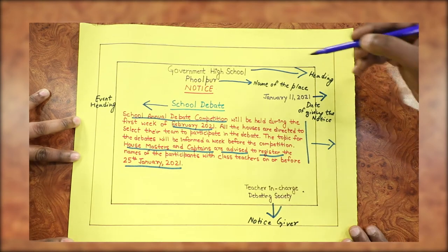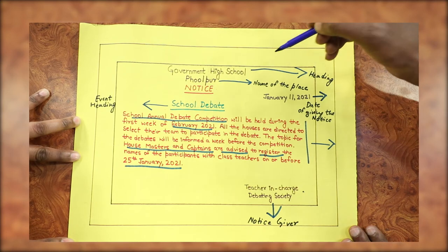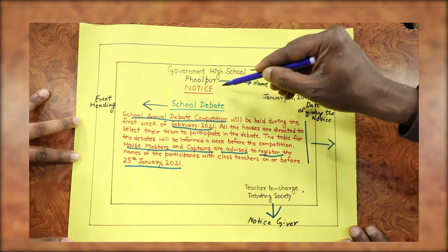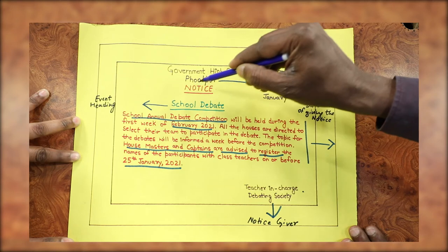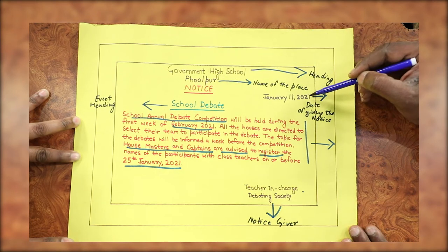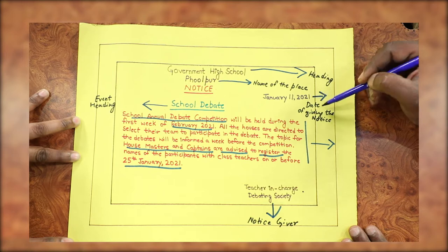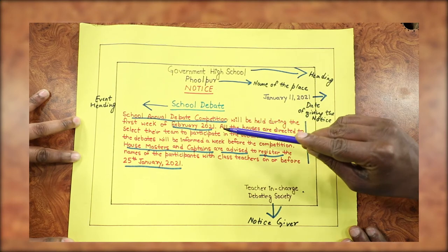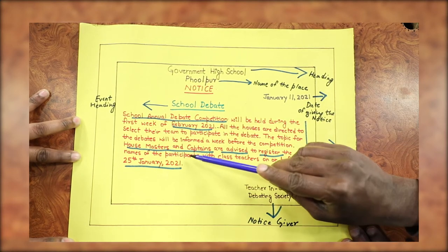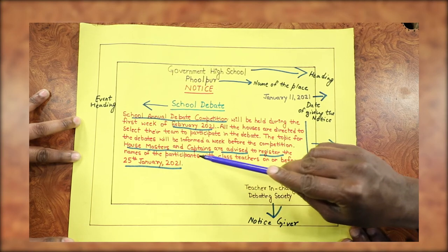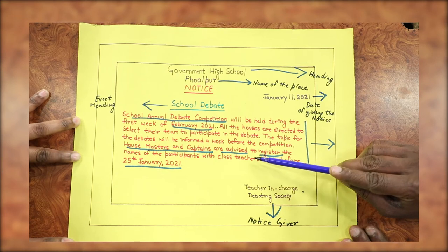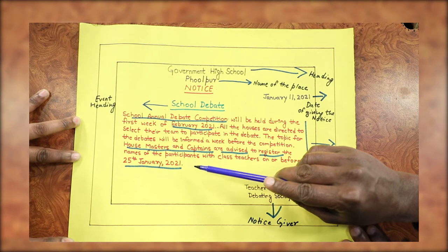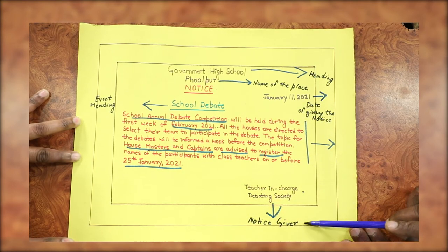Let me recapitulate. First, the heading — the institutional heading and name of the place. Then 'NOTICE', which you may write in all caps or with a capital N and other letters small. Then the date on which the notice is given. Then the event heading — here it is 'School Debate'. What is the event and when it is happening? What is expected by the people concerned? Here, house masters and captains have to give names on or before 25th January. Then the person who gives the notice.